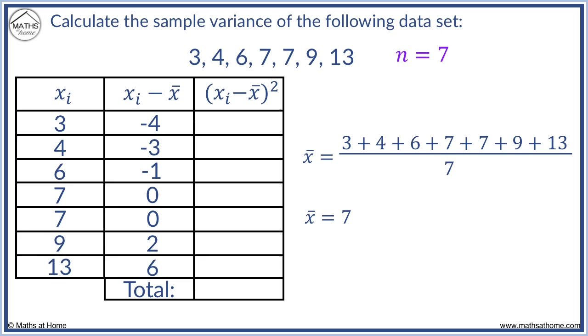We now square each of these values. Remember, when we square a negative number, it becomes positive. Therefore, minus 4 squared equals 16. Minus 3 squared equals 9. Minus 1 squared equals 1. 0 squared equals 0. 0 squared equals 0. 2 squared equals 4. And 6 squared equals 36.